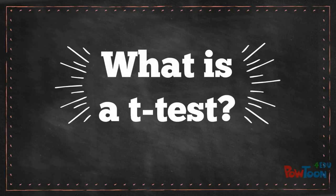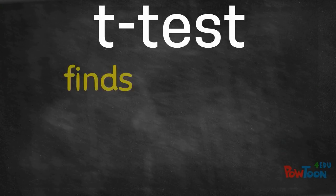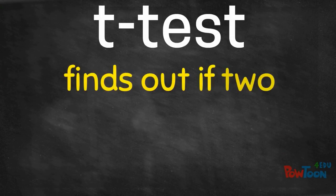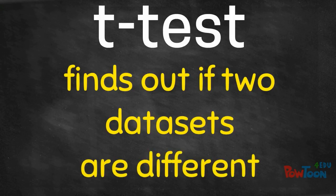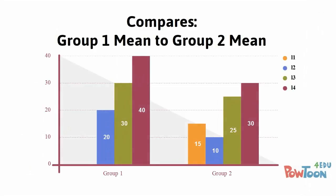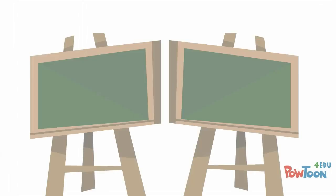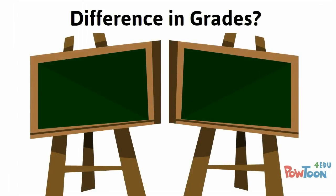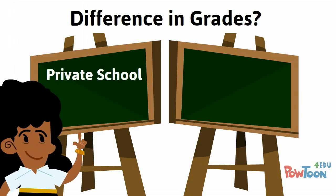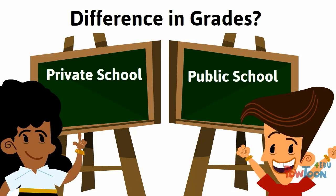What is a t-test? A t-test is used to find out if two sets of data are significantly different from each other. It compares the two sets of data and their means. You could use a t-test to determine if a difference in grades exists between children attending a private or public school.